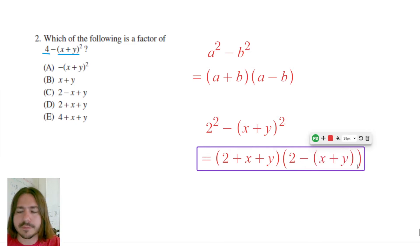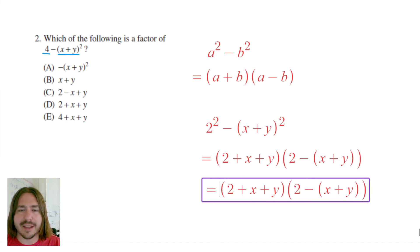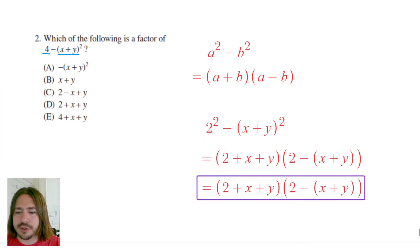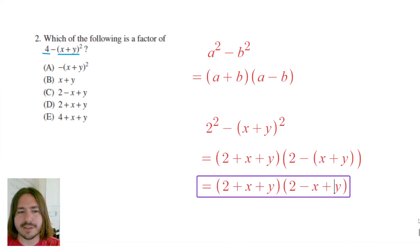So the two factors here are still 2+x+y as one of my factors, and my other factor would be 2-x-y. Now the correct answer here is going to be D.